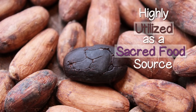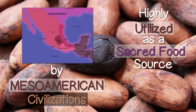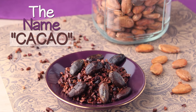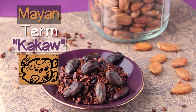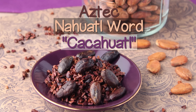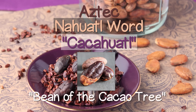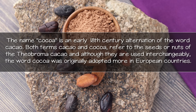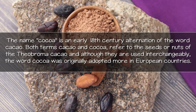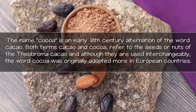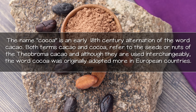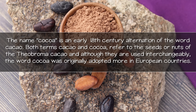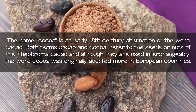Cacao was highly utilized as a sacred food source by Mesoamerican civilizations. The name cacao is believed to be derived from a combination of the Mayan term 'cacao' and the Aztec Nahuatl word 'cacahuatl,' meaning bean of the cacao tree. The name cocoa is an early 18th century alteration of the word cacao. Both terms refer to the seeds or nuts of the Theobroma cacao, and although sometimes used interchangeably, cocoa was originally adopted more in European countries.